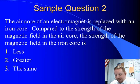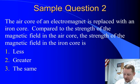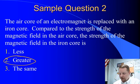So, question 2. The air core of an electromagnet is replaced with an iron core. Compared to the strength of the magnetic field in the air core, the strength of the magnetic field in the iron core is less, greater or the same. Well, when you put iron in the core of an electromagnet, it gets much stronger. So, the magnetic field must be greater.